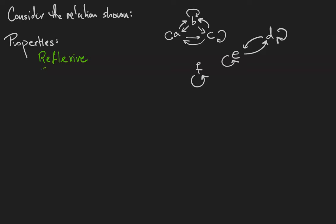It is symmetric because anytime there is a relation between two elements that relation also goes the other way, and it's also transitive because anytime there's a walk between two elements there's also the direct arrow between those two elements.